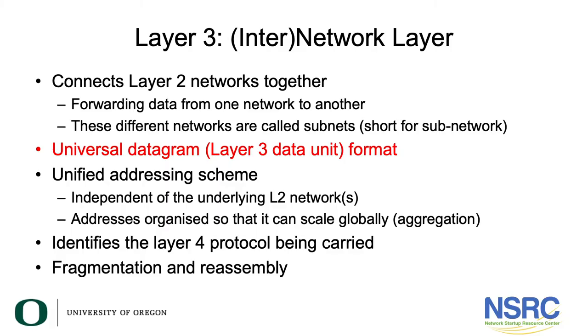Now let's have a look at layer 3. Layer 3 is the network layer, or sometimes called the inter-network layer. We said before that the size of a layer 2 network is limited — you can't make them arbitrarily large. So the job of layer 3 is to join multiple layer 2 networks together and forward traffic from one network to another, and if necessary through another network and so on to reach the final destination. These different networks connected together are called subnets, or subnetworks, and together what you build is an inter-network — in other words, the internet.